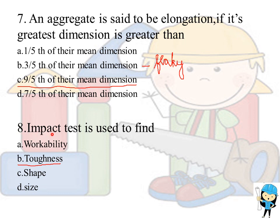The impact test is used to find the toughness of the stone. The workability tests are the slump cone test, VB consistometer, and flow table test. The shape and size tests are the flakiness index and the elongation index.